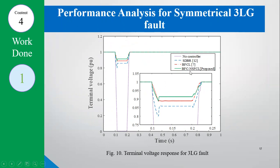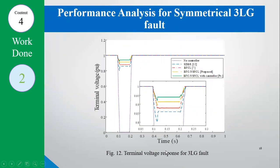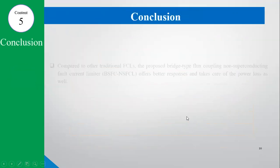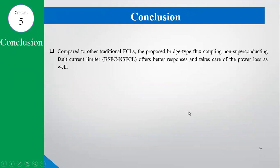We have the output results with non-linear BFC-NSFCL. We created 3LG fault, LL fault, and 1LG fault. The graphical results and statistical results show that our proposed fault current limiter with controller performs better than others like DBR and bridge-type fault current limiter, with better power loss and performance.